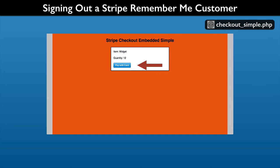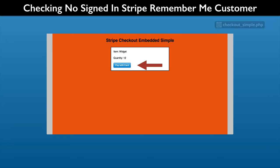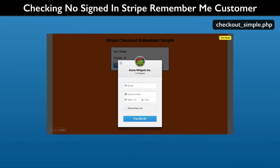Now we will sign out the Stripe Remember Me customer. First, reload the web page and click the Pay with Card button. We will need the email address in the form, so make a note of it. Click the Log Out link. Keep in mind the login has to do with Stripe and not your website. Let's confirm that no Stripe Remember Me customer is signed in — reload the web page and click the Pay with Card button. The blank form is our sign that no Stripe customer is signed in, so you can close the form.